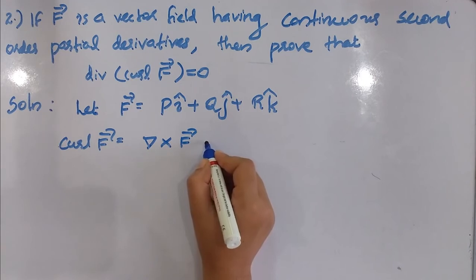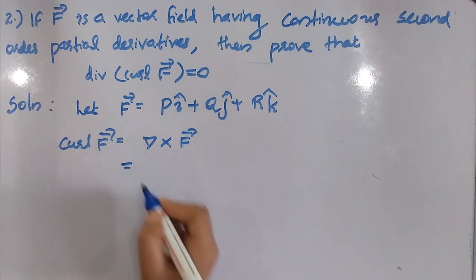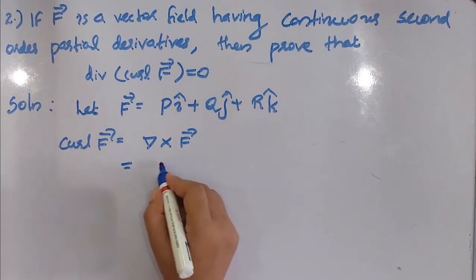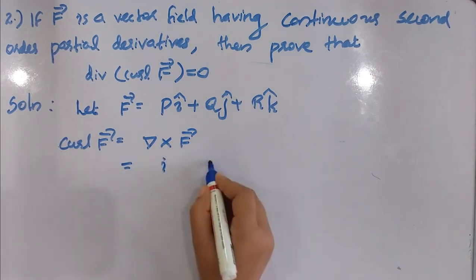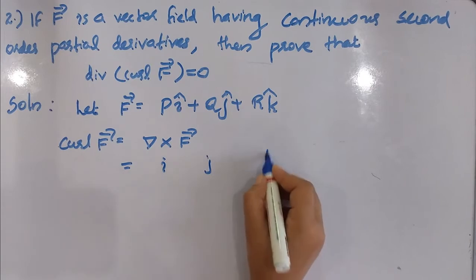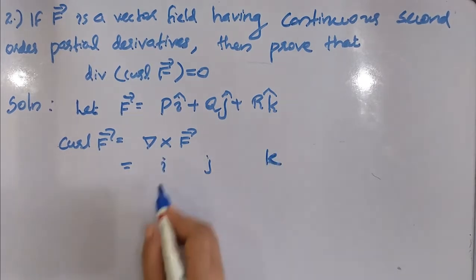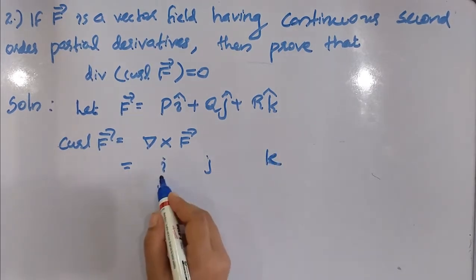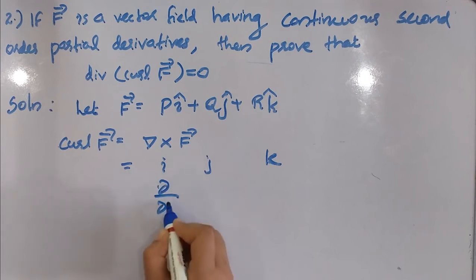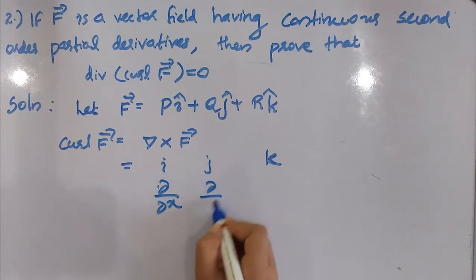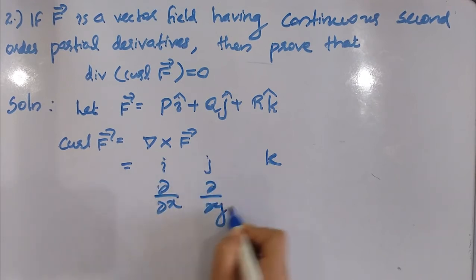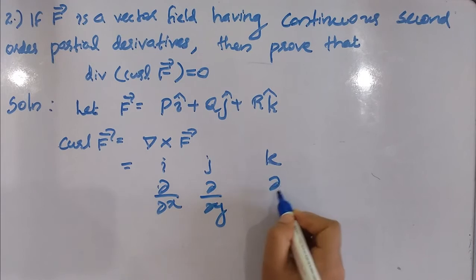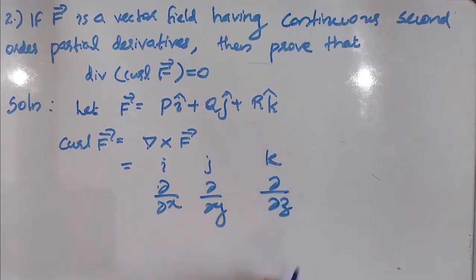So, the value of del cross F is written as the determinant with i, j, k. Del contains the elements: i is the coefficient with ∂/∂x, j is the coefficient with ∂/∂y, and the third row has ∂/∂z.